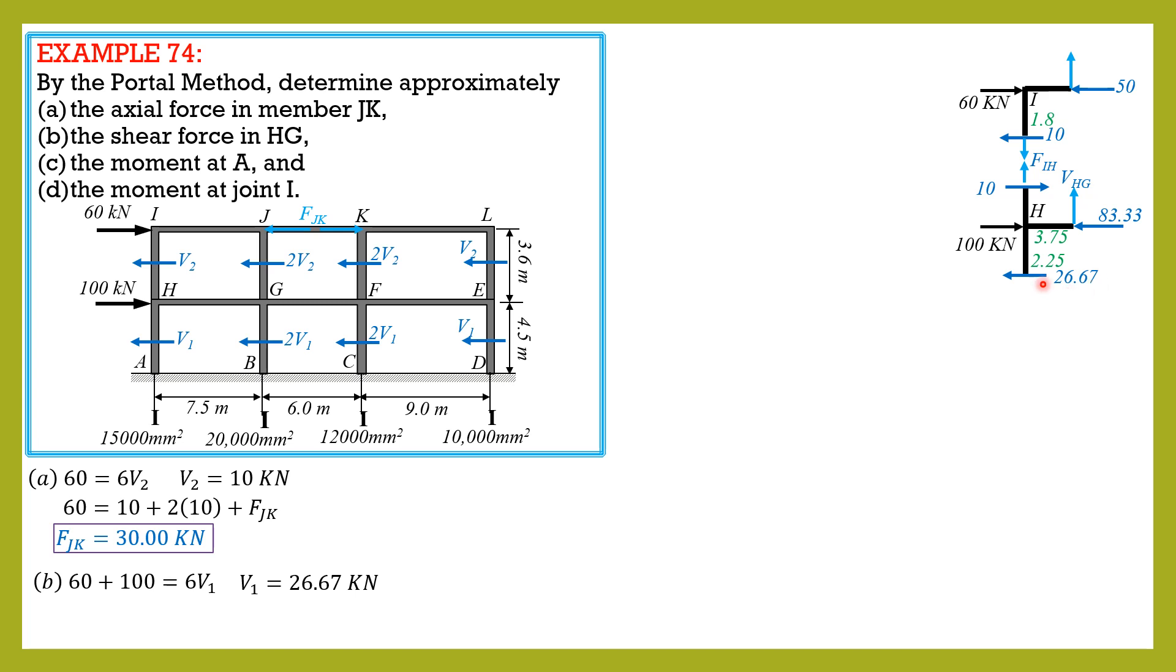If we sum up moment about this point here called EH, then we can solve VHg. So considering this free body diagram, summation of moments about this point equals 0, counterclockwise positive. So VHg times 3.75, where 3.75 is half of 7.5, plus 83.33 times 2.25, green colored markings or figures are distances, then equals 10 times 1.8 plus 2.25, then plus 100 times 2.25. So those are the forces involved. These forces are not involved because we sum up moment about this point. So solving for VHg, it is equal to the shear force in HG, 20.8 kN.